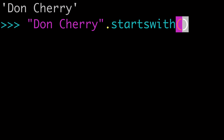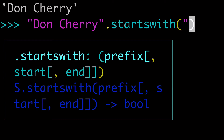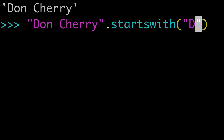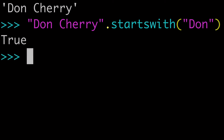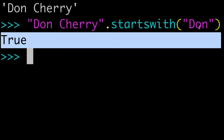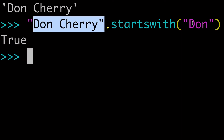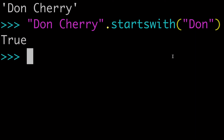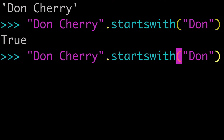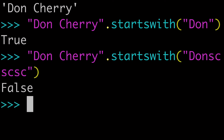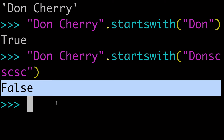What you want to do is pass your substring or argument to it like this — we would pass 'Don' and run that. And we know that to be true: that 'Don Cherry' does, in fact, start with 'Don'. And of course, if you were to pass something else, just a random string, when we run that, we're going to find that to be false.